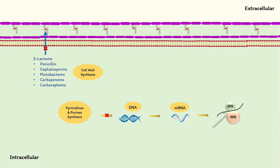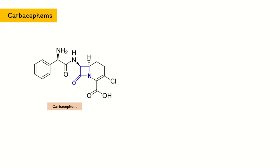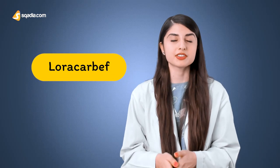They also prevent bacterial cell division by inhibiting cell wall synthesis. They are similar in structure to cephalosporins, and the main difference is that they contain a methylene group in place of a sulfur atom in cephalosporin.